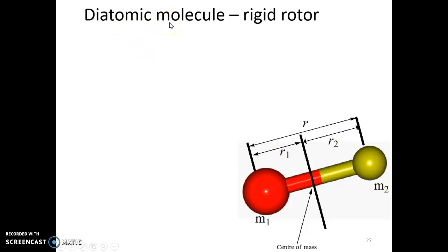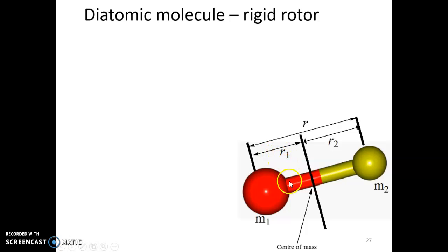The simplest linear molecule to consider is a diatomic molecule — two atoms joined by a bond of length r. With mass m1 and mass m2, the rotating distances from the center of mass are r1 for m1 and r2 for m2, where the rotating axis coincides with the center of mass.